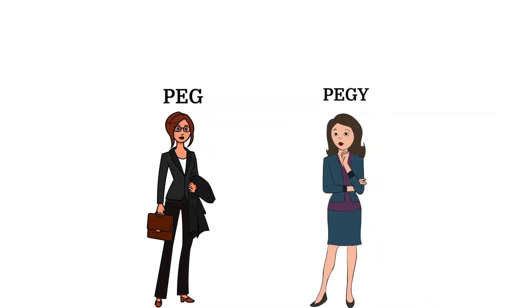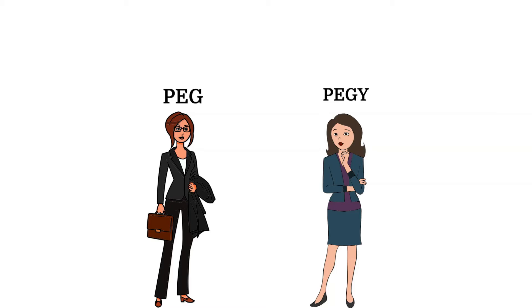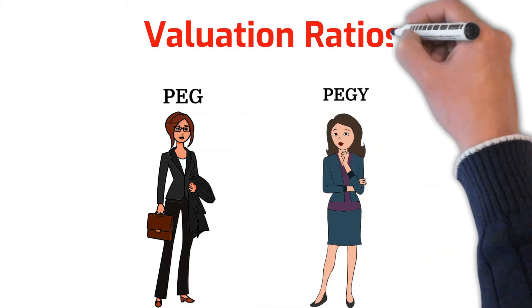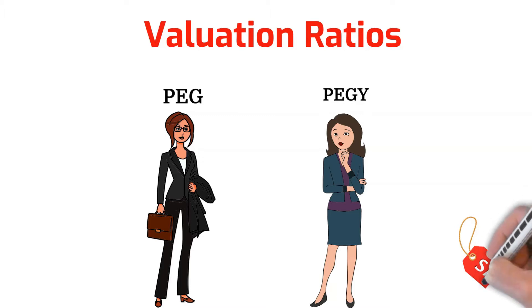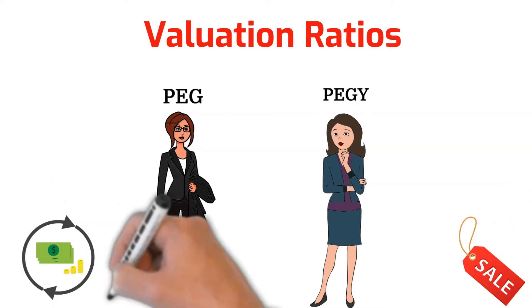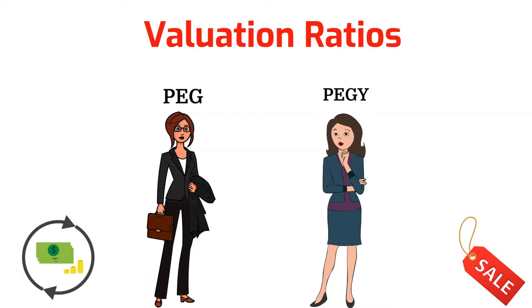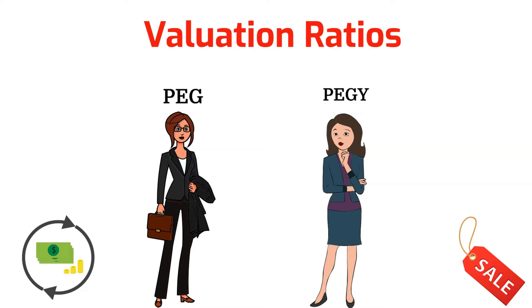They are PEG and PEGGY. PEG and PEGGY are valuation ratios that can help potential investors spot undervalued stocks based on earnings or dividend yield. In this video, you'll learn how PEG and PEGGY are calculated and how they may help you spot potentially undervalued stocks.